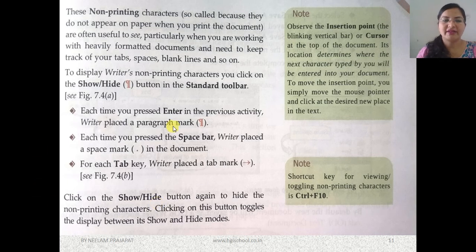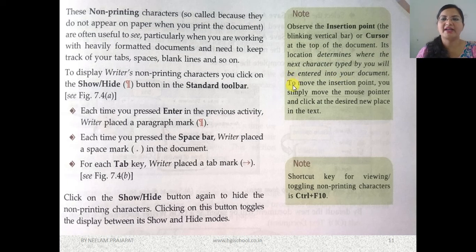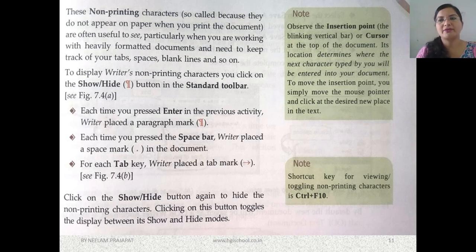Observe the insertion point — the blinking vertical bar, that is the cursor — at the top of the document. Its location determines where the next character you type will be entered into your document. To move the insertion point, simply move the mouse pointer and click at the desired new place in the text.